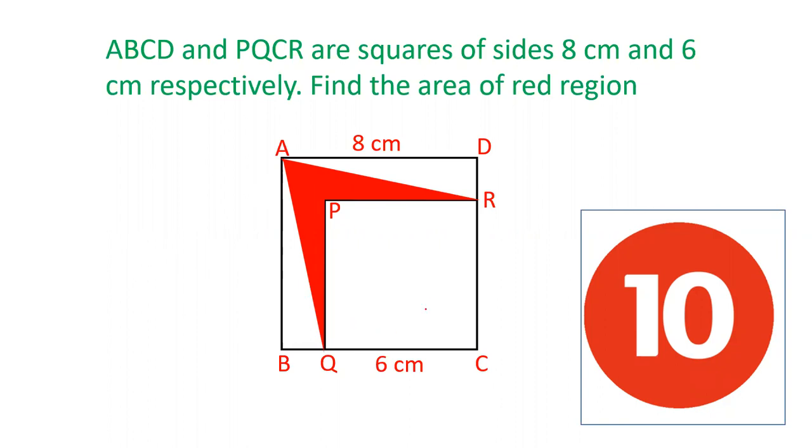Two squares are given: ABCD and PQCR. The side of square ABCD is 8 centimeters. The side of PQCR is 6 centimeters.